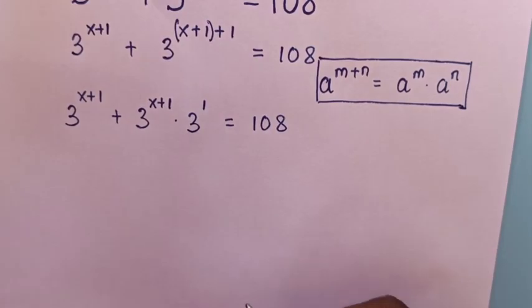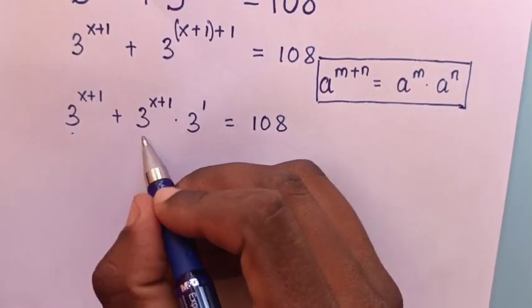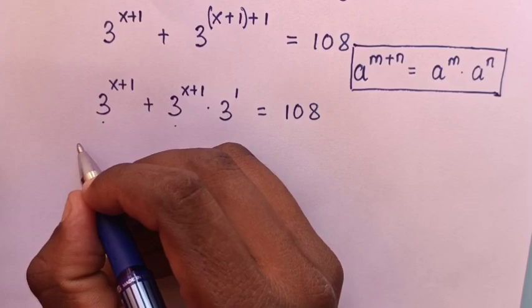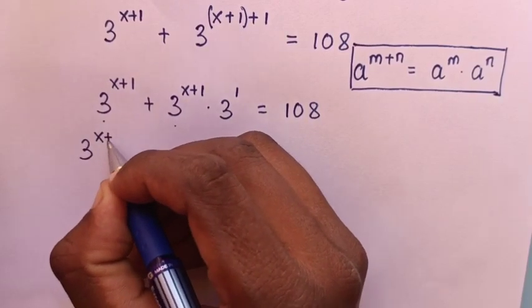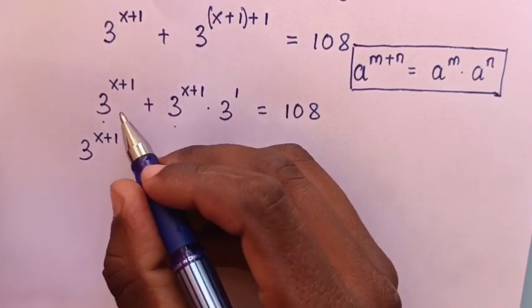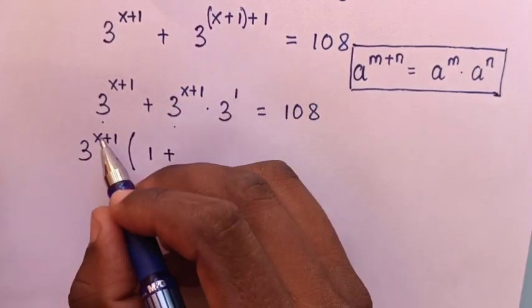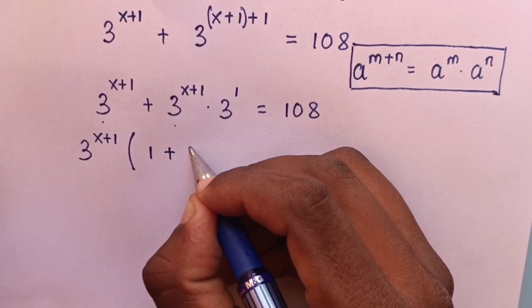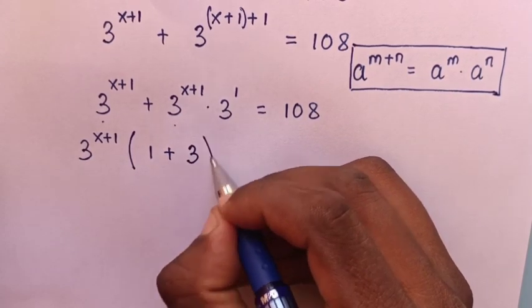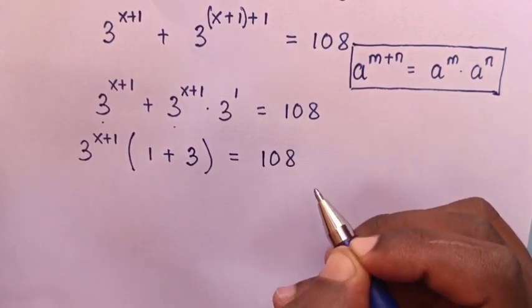Then in the next step, here 3 power x plus 1 is common, so we take 3 power x plus 1 out of bracket. So this divided by this is 1 plus this divided by this. It will be 3 power 1 which is 3. Then bracket is equal to 108.